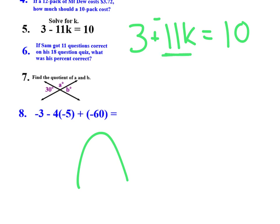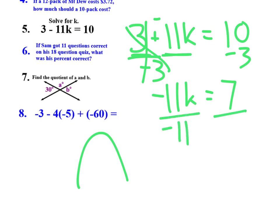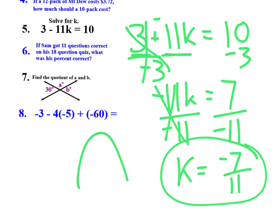Cancel out here, which leaves us a negative 11k equals 7. If they multiplied by negative 11, I'm doing the opposite because I'm undoing it. I divide by negative 11. Those cancel out, and you're left with k equals negative 7/11.